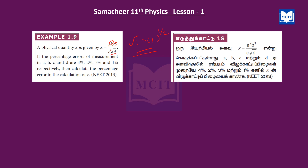If the percentage errors of the measurement in a, b, c, and d are given — that is, one variable percentage error value each — then calculate the percentage error of x.